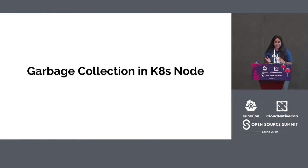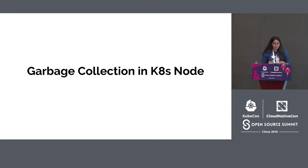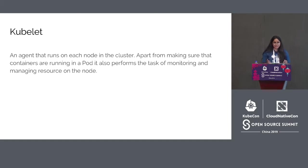We will now see how garbage collection works at the node level. Node-level garbage collection is managed by Kubelet, which performs image garbage collection, container garbage collection, eviction, and resource reclaims at the node level. Kubelet is a Kubernetes agent which runs on each node in the cluster. Apart from making sure that containers are running in the pod, it also performs the task of monitoring and managing resources on the node. Kubelet reports node status updates to the master at regular intervals so that the scheduler can schedule pods as per resources available on the node.